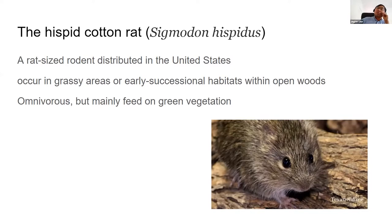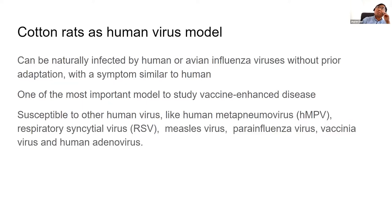It's a rat-sized rodent you can find in the United States. They mainly inhabit woods but sometimes invade human habitats and feed on green vegetables. There are many rodent species in the world, but what makes these species especially interesting is their viral susceptibility. It is more similar to human than mouse.